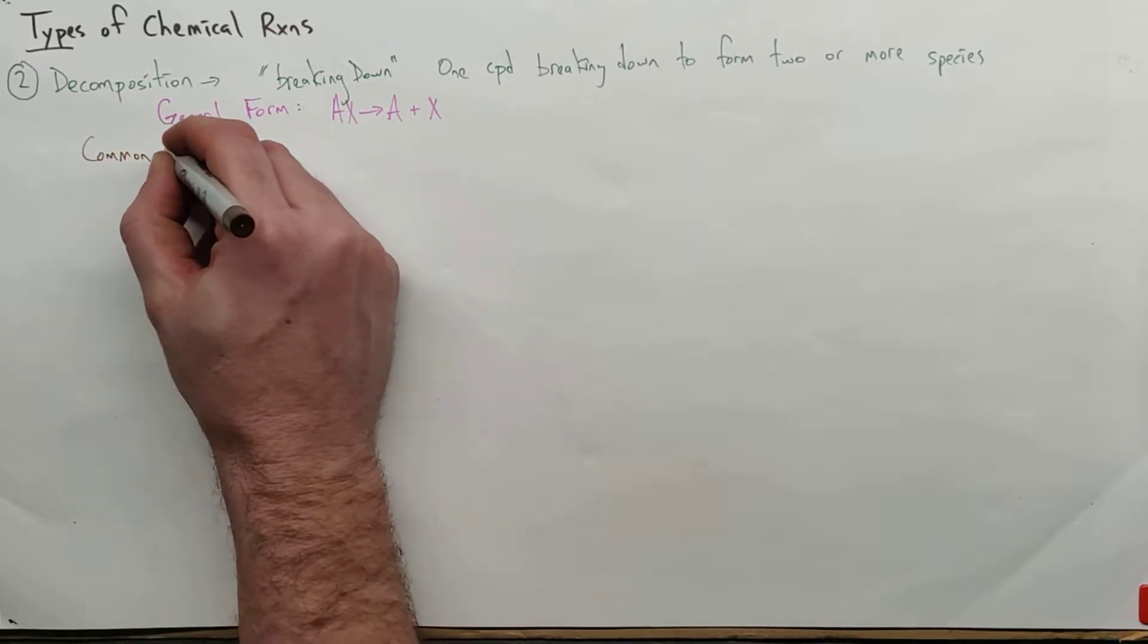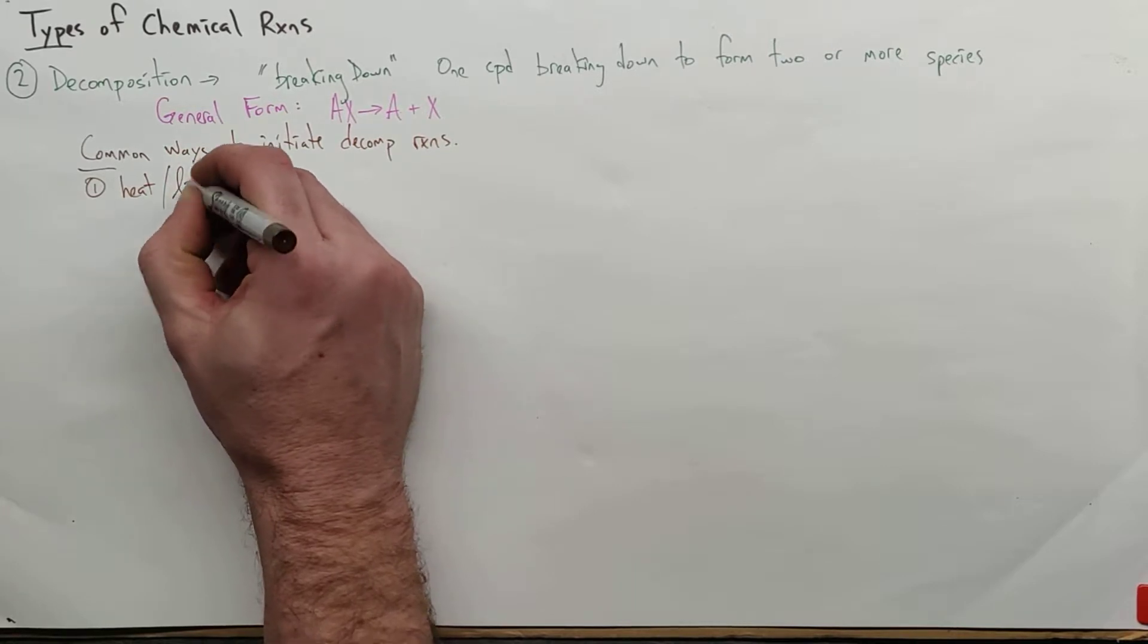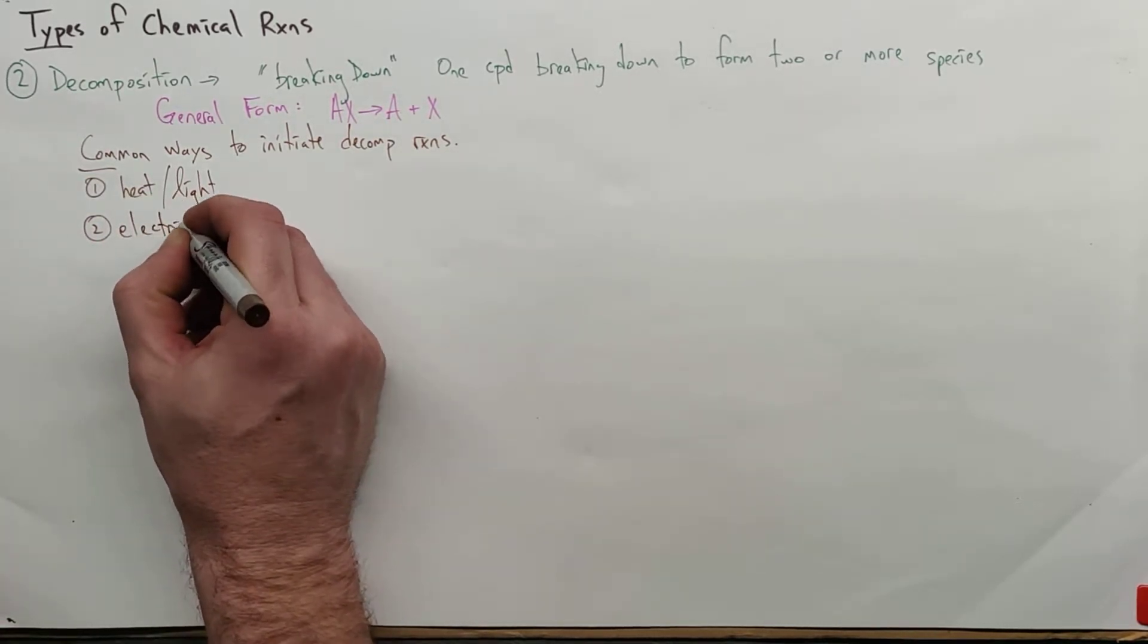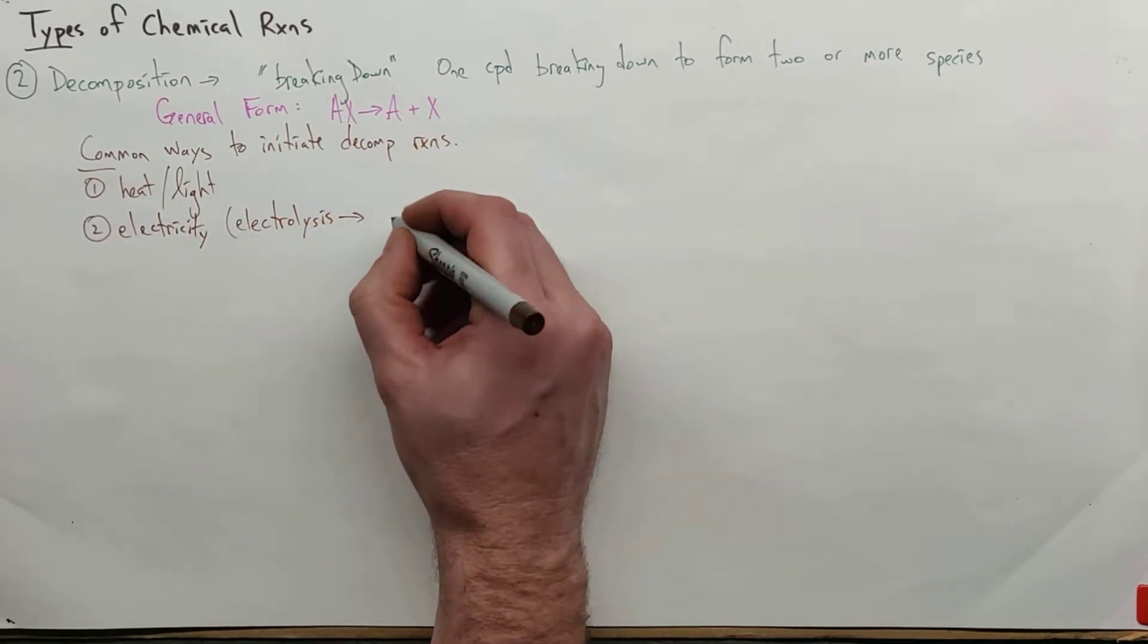Before we do that, there's a little more information I want to discuss about decomposition reactions. It's just worth mentioning some common ways to initiate decomposition reactions. You can ponder this on your own, but if not triggered, some things might not decompose. If you leave, like I used the example earlier, this fish washes up on the beach, it sits in the hot sun and starts to decay. Well, the heat is generally a good way to initiate a decomposition reaction. So, heat or light. A second way that I think is going to come up in a little bit is electricity - we call that electrolysis, where you're using electricity to cause a chemical reaction.